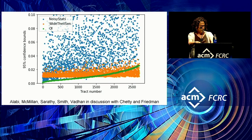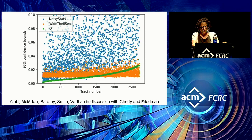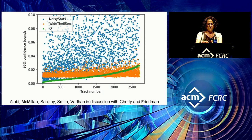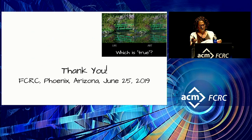In very recent work, Alami, McMillan, Cerati, Smith, and Vadan, in discussion with Chetty and Friedman, have been looking at truly differentially private algorithms. They've made a lot of progress on a truly differentially private solution. With work, it's looking like it's becoming possible to get at least close to the results of Chetty and Friedman. And that's it. Thank you.